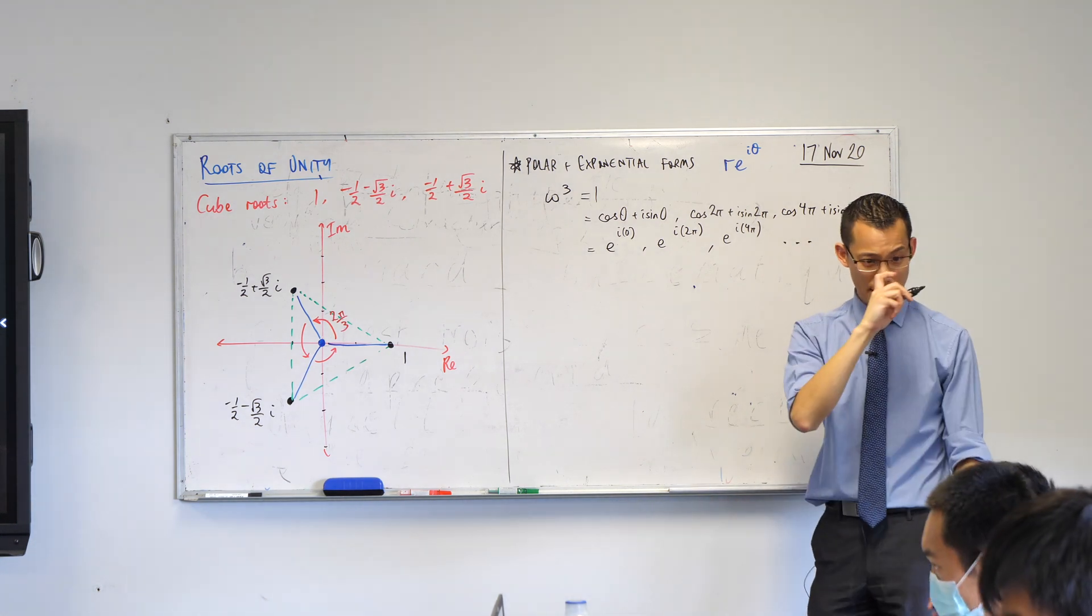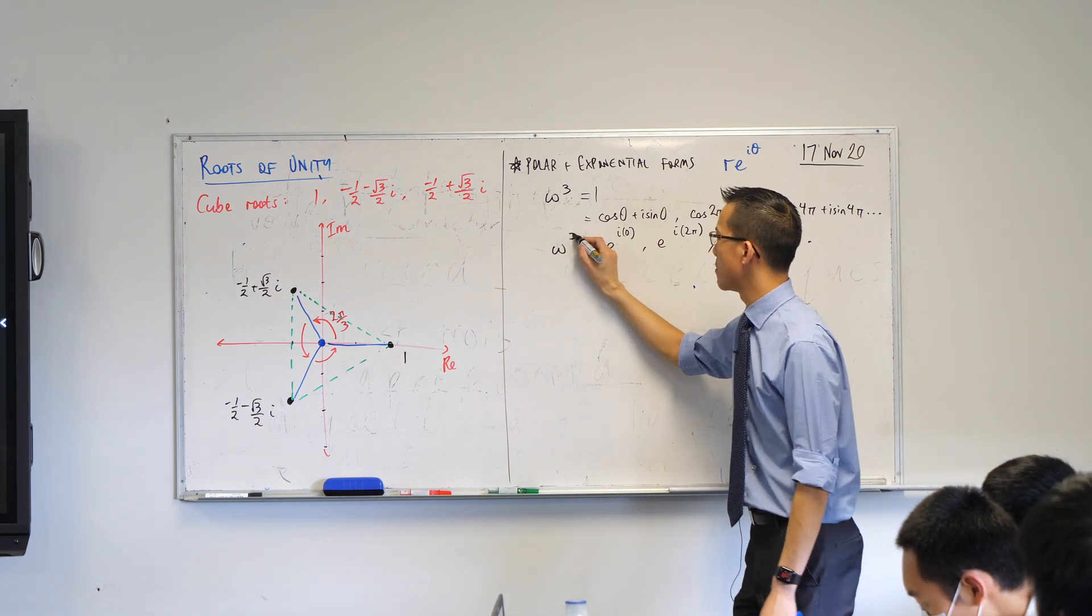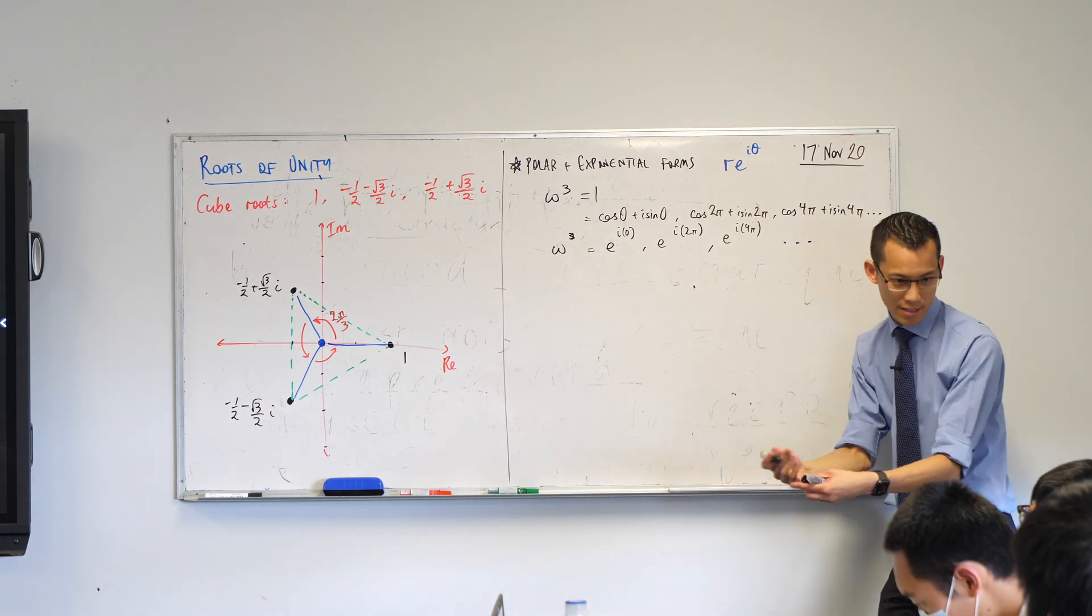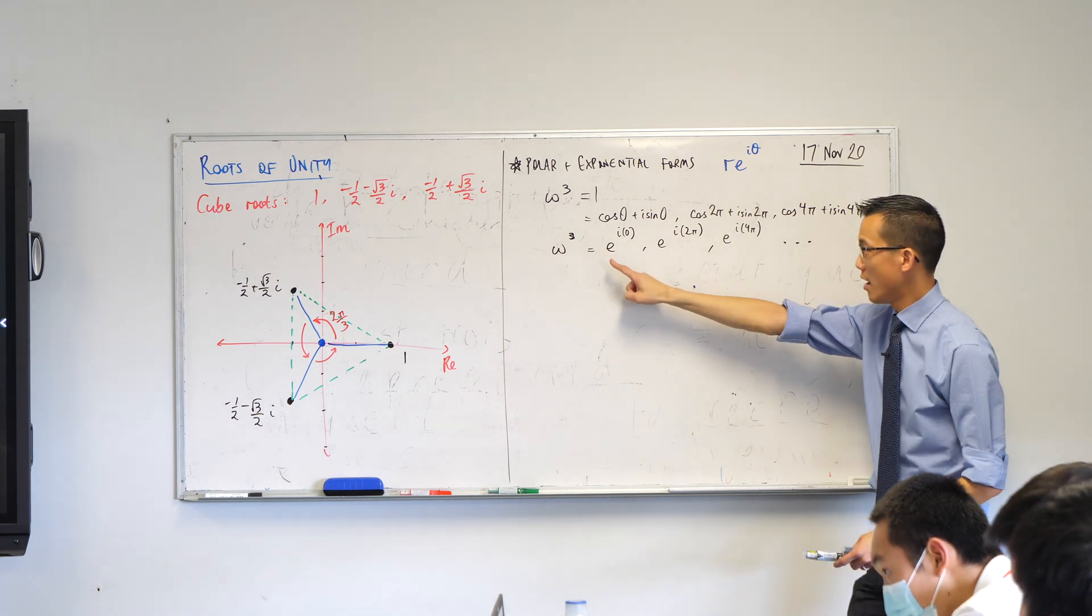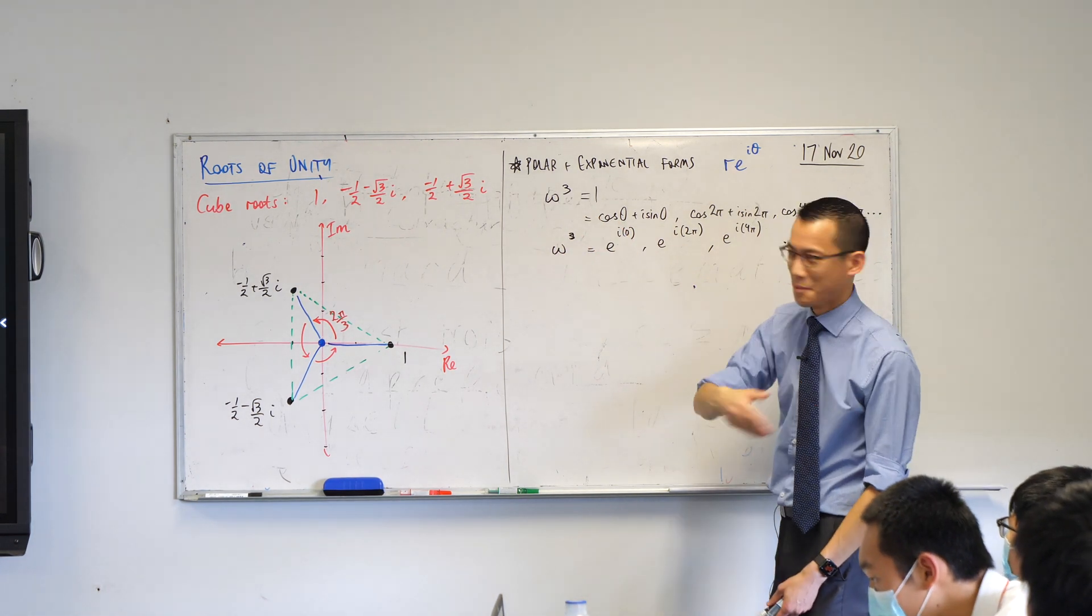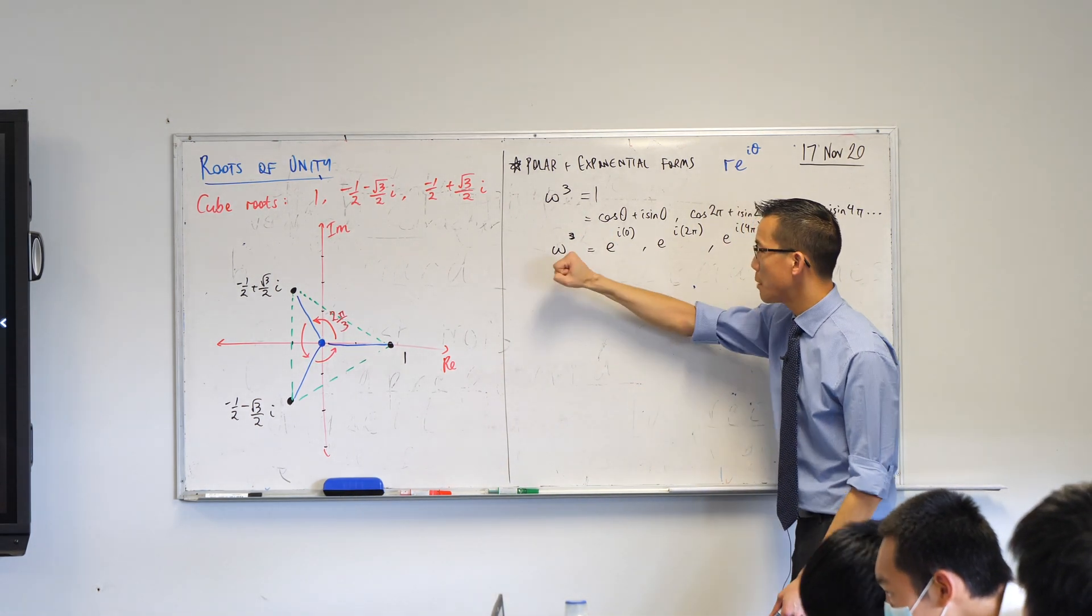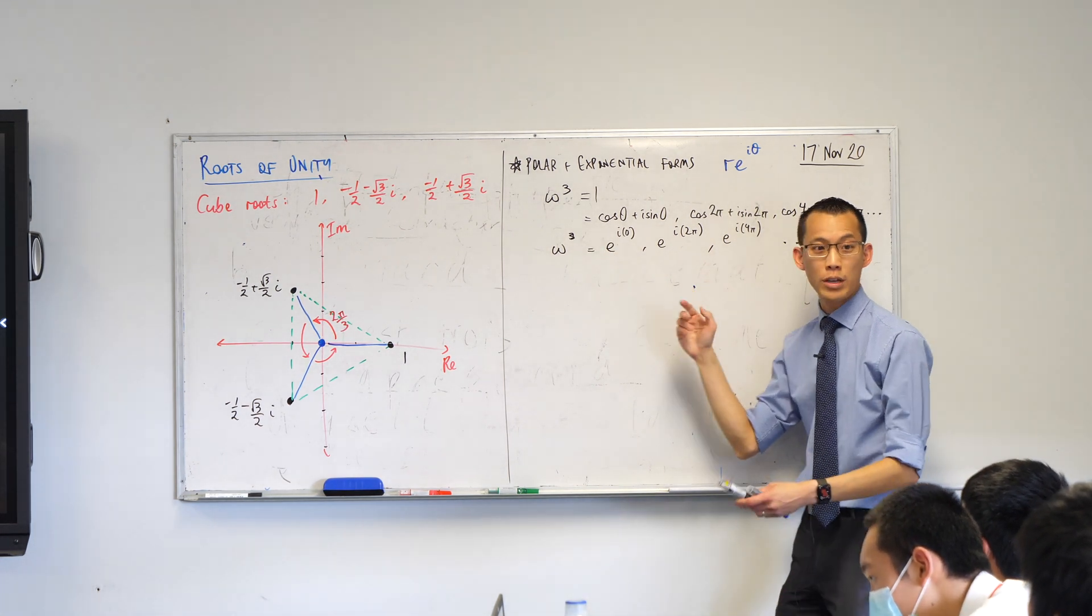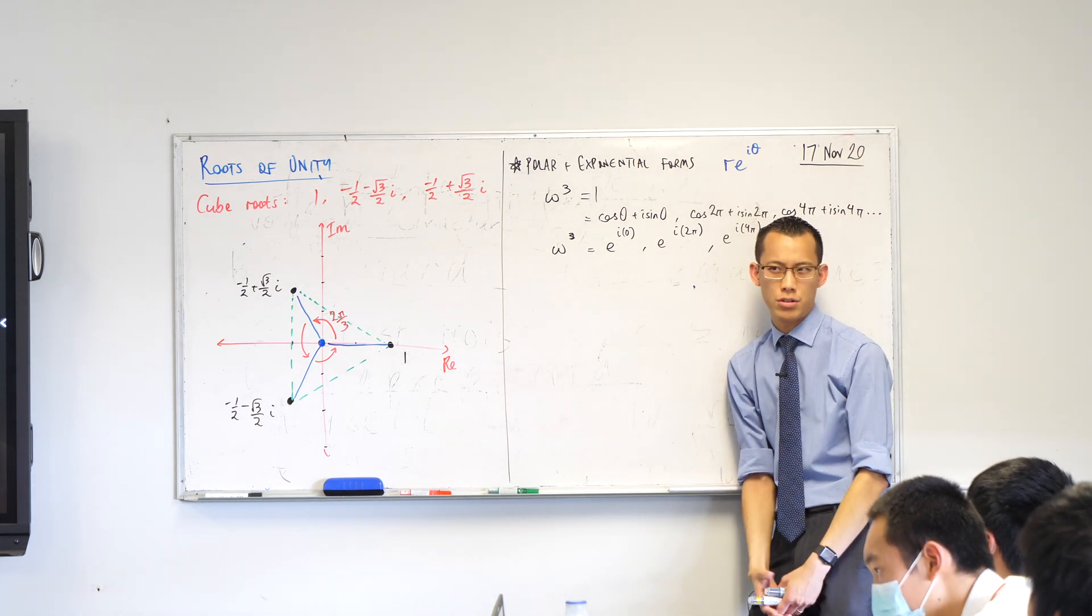Now why might it be useful for me to do this? Well, I'm trying to deal with this power. Exponential form is presented in such a way as to make dealing with powers very easy. I don't want omega cubed, I want just omega. So what should be the operation that we apply to both sides, think in terms of powers here, that will give me not omega cubed but just omega? What power should I raise to?